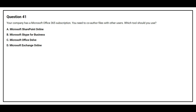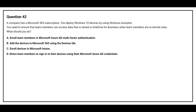Question number 41: Your company has a Microsoft Office 365 subscription. You need to co-author files with other users. Which tool should you use? Option A: Microsoft SharePoint Online. Option B: Microsoft Skype for Business. Option C: Microsoft Office Delve. Option D: Microsoft Yammer Online. The correct answer is Option A: Microsoft SharePoint Online.